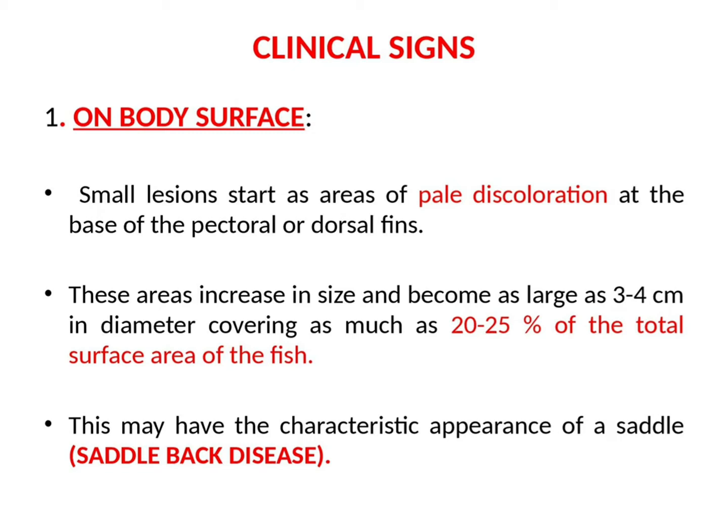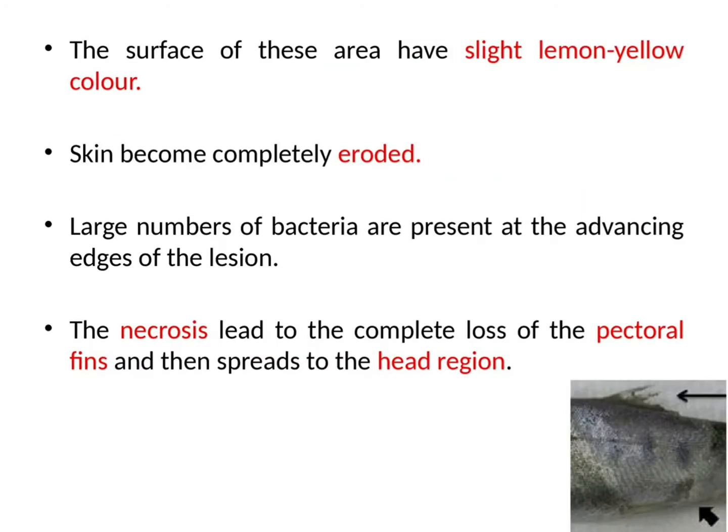Small lesions start as areas of pale discoloration at the base of the pectoral or dorsal fins. These areas increase in size and become as large as 3 to 4 centimeters in diameter, covering about 20 to 25 percent of the total surface area of the fish. This may have a characteristic appearance of a saddle, so this disease is also known as saddle back disease. The surface of these areas has a slight lemon yellow color and the skin becomes completely eroded. Large numbers of bacteria are present at the advancing edges of the lesion. The necrosis leads to complete loss of the pectoral fins and then spreads to the head region.